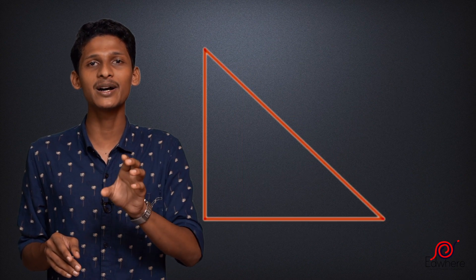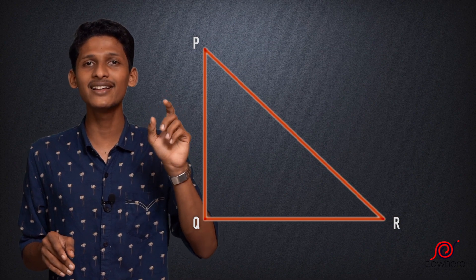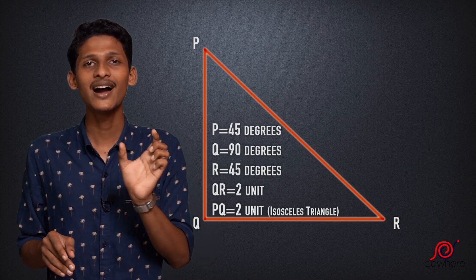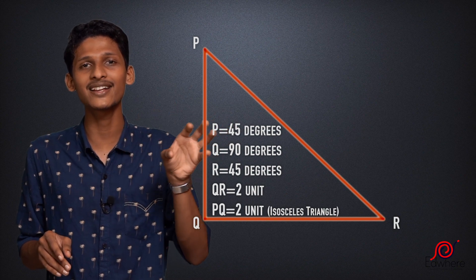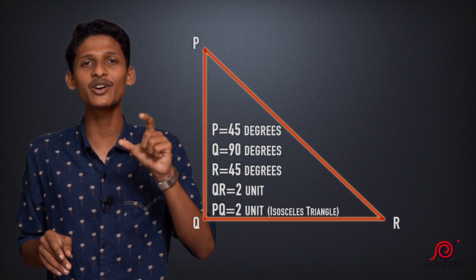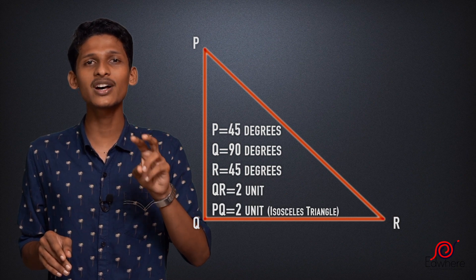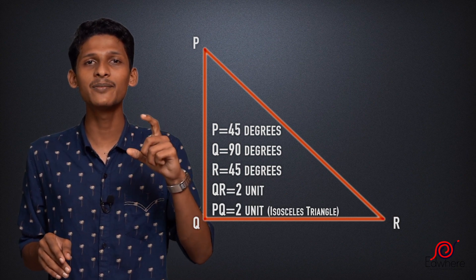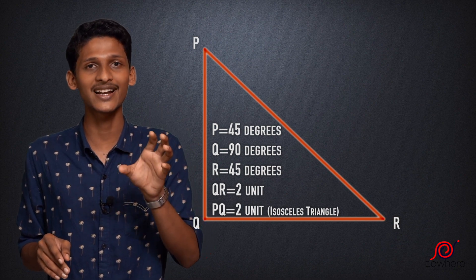Now we have to use another triangle, PQR. In this triangle, P angle is 45 degrees, Q angle is 90 degrees, and R angle is 45 degrees. The side QR is 2, and PQ is 2. It is an isosceles triangle.